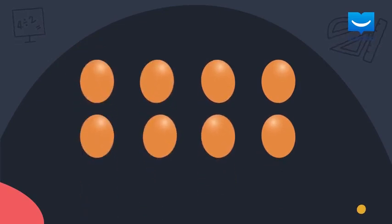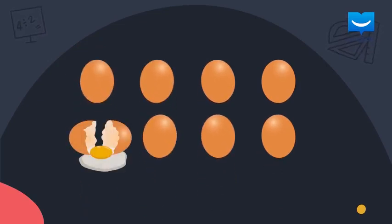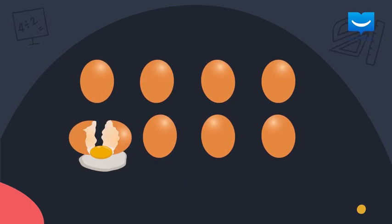If you had 8 eggs and 1 got broken, what happened? An addition or a subtraction?